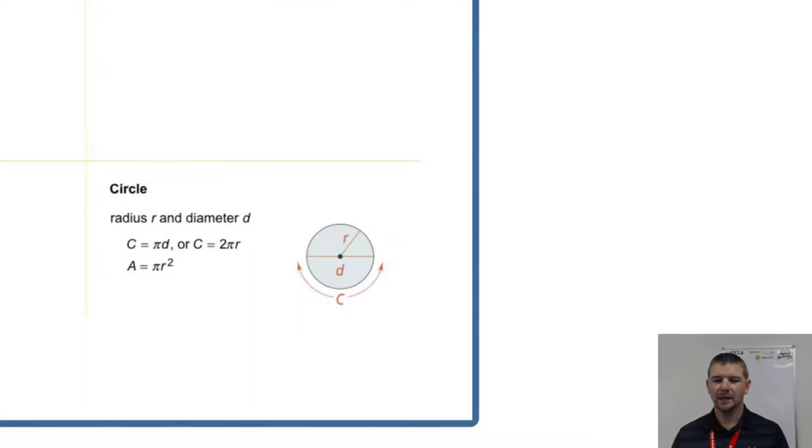And finally, a circle. Here we have a circle with radius r and diameter d. Its circumference is pi times d, or that can be written as 2 times pi times the radius. Recall this is because the diameter equals 2 times the radius. The area of a circle is pi times the radius length squared.